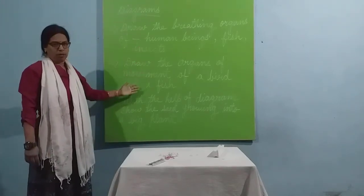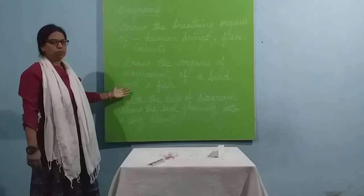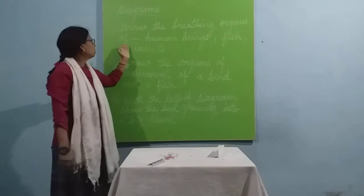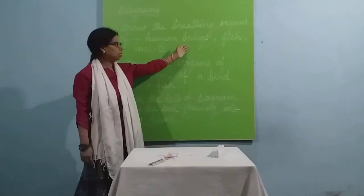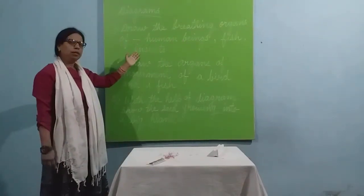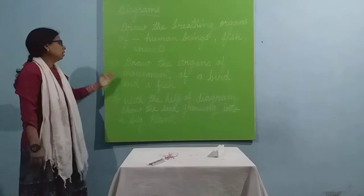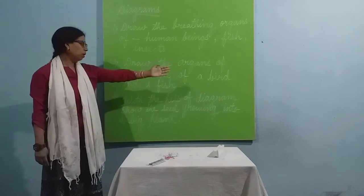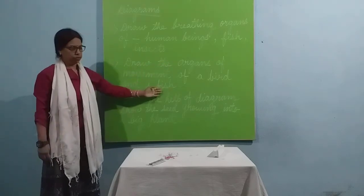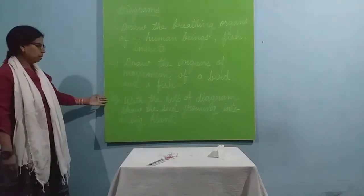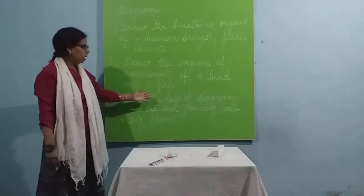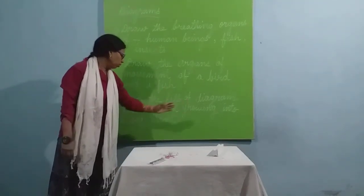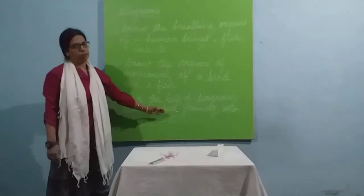Question number 4, draw the breathing organs of human beings, fish and insects. Second diagram, draw the organs of movement of a bird and of fish, and third diagram which you have to do is with the help of a diagram show the seed growing into a big plant.